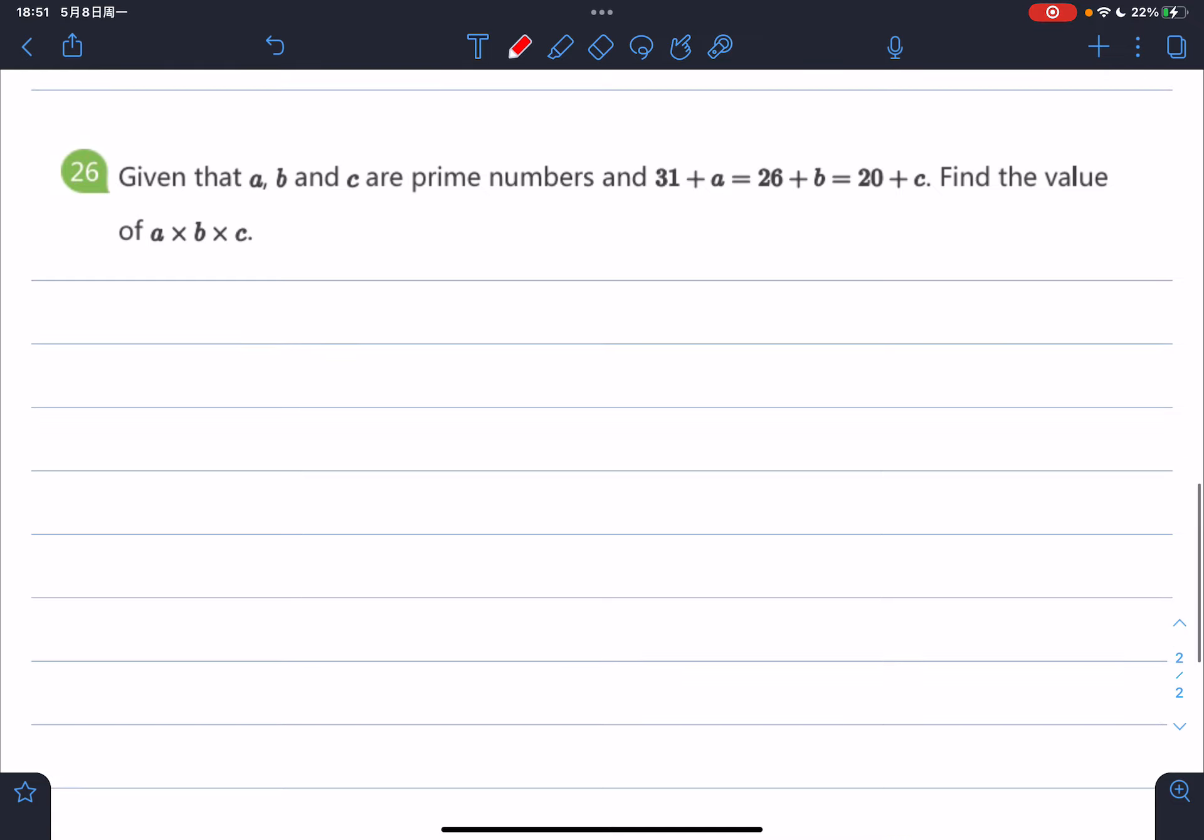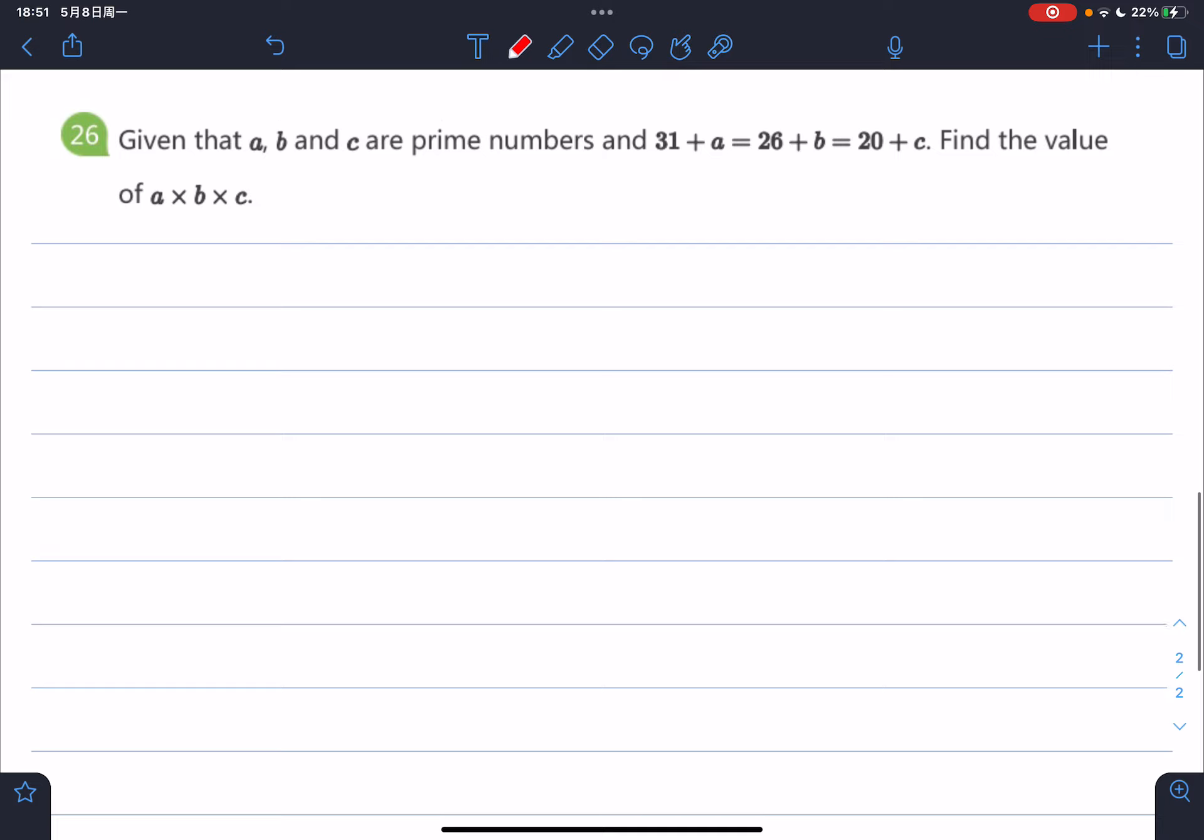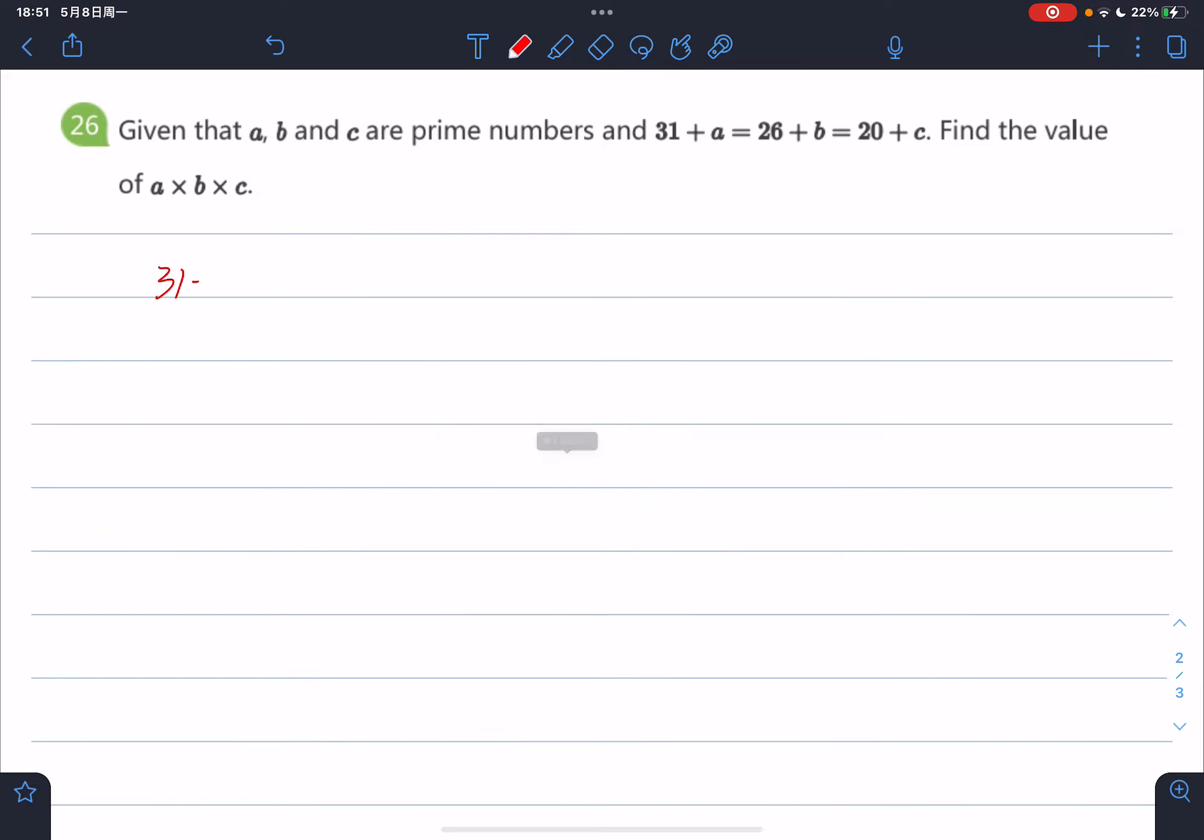First of all, we can write down the first equation. The sum of 31 and a equals the sum of 26 and b. Based on this equation, we may find out 5 + a = b.